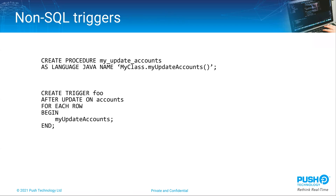What would be great would be the ability to sidestep all of the shadow tables and send data directly from the trigger. Some databases — but not all — allow us to do this. Oracle lets you write stored procedures that call Java methods and you can use those procedures with triggers. MySQL is trickier in that it doesn't natively allow Java but you can write custom C and C++ functions that can be used in triggers. While this approach isn't portable, it does get us to the point where we can be notified of table changes when they happen and handle them in our code.